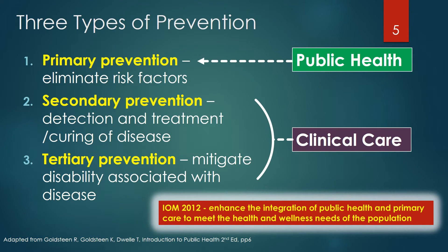Let's spend a few minutes discussing the three types of prevention, including primary, secondary, and tertiary. Primary prevention is eliminating risk factors that cause disease. Primary prevention would be vaccinations for measles, hepatitis A, tetanus, human papillomavirus, etc., to prevent a person from getting the disease. It would also be the result of effective tobacco prevention education programs, preventing smoking-related diseases like cancer, chronic lung disease, and cardiovascular disease.